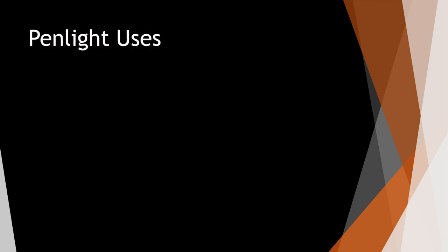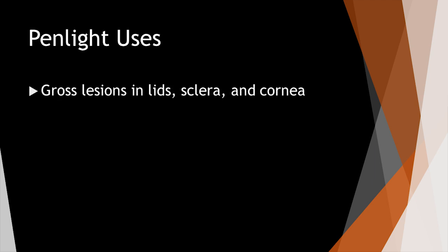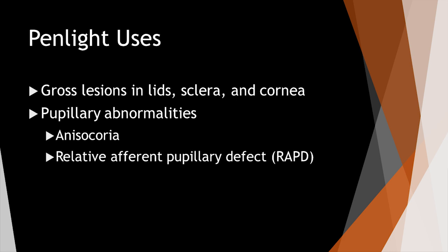The pen light can be used to determine many different things and is a useful tool to help examine the eye. It can be used to see gross lesions in the lids, the sclera, and the cornea. It can be used to detect pupillary abnormalities, including anisocoria and the relative afferent pupillary defect, or RAPD. And it can also be used to find a red reflex. Many of these topics are discussed elsewhere in the Moran core, and you can direct your attention to those videos and tutorials to learn more.